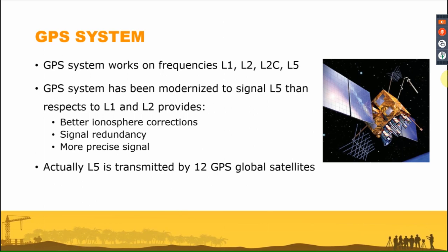The GPS system works on L1, L2, and L5 frequencies. L5 is the modernized signal that, compared to L1 and L2, provides better ionospheric correction, meaning atmospheric models can be better estimated and reduced. It also provides better signal redundancy, especially in difficult environments like multipath. L5 is already used on our receivers, and in the future all new satellites will transmit L5 — so buying a receiver capable of L5 is also an advantage for the future.